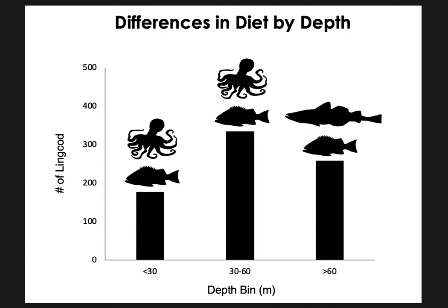I want to highlight differences in diet by depth. Lingcod were grouped into depth bins to better understand how diet changes for lingcod collected in shallow, moderate, and deep depth bins. Cephalopods were the most important prey group for the shallow and moderate depth bins, and gadids were the most important prey group for the deep depth bin. Scorpaenids were the second most important prey group in each.